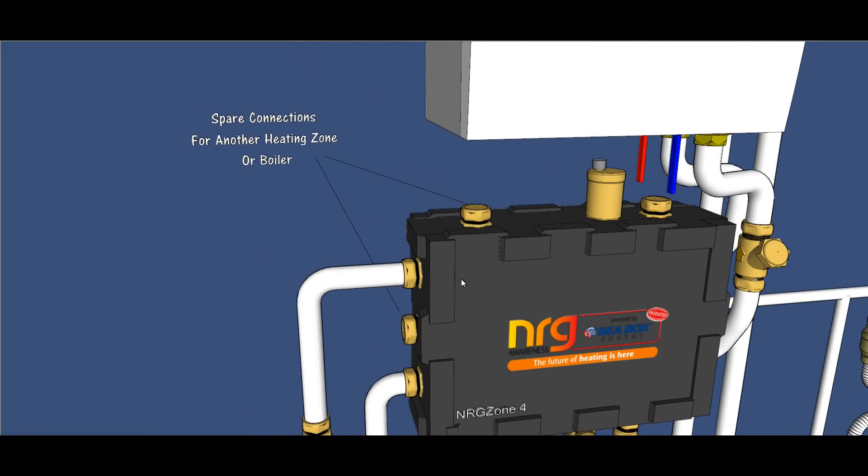Even though we've shown that this has a heat appliance connected, it still has some spare connections. For instance, this one could be used for a zone or an additional boiler, maybe a solid fuel boiler. This could actually be another zone return coming back in.